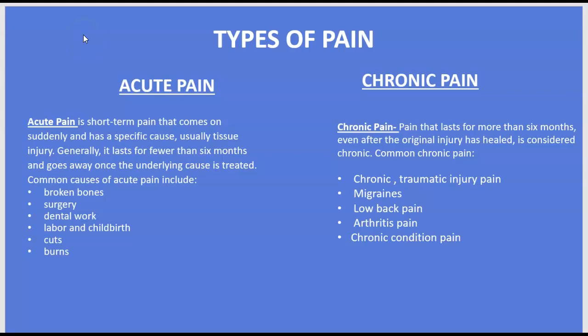There are two types of pain. First, we have acute pain — I'm sure by now everyone has had some sort of acute pain in their lives. This is short-term pain that comes on suddenly and has a specific cause, usually associated with some type of tissue injury. Generally it lasts for fewer than six months and goes away once the underlying cause is treated.